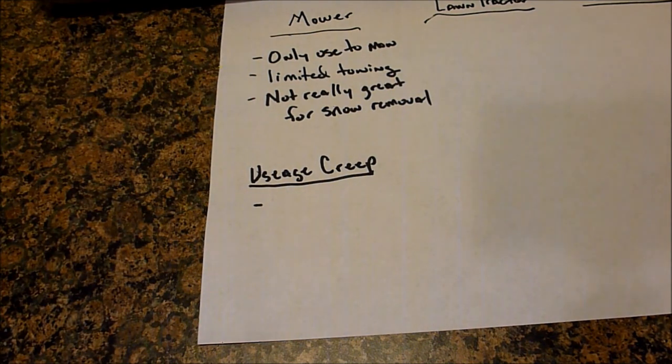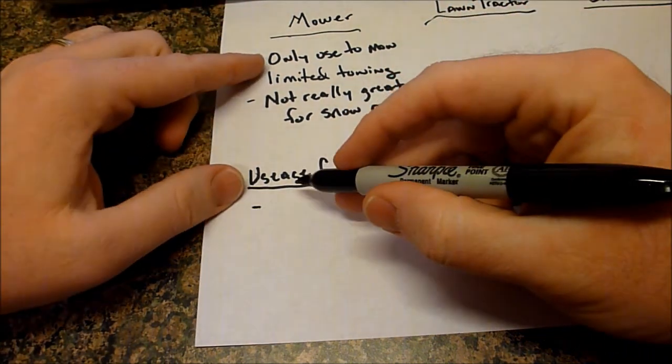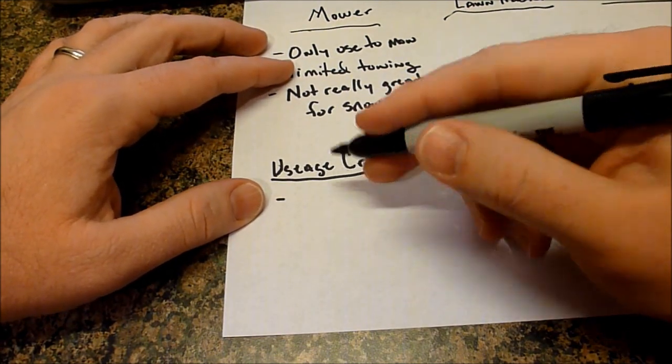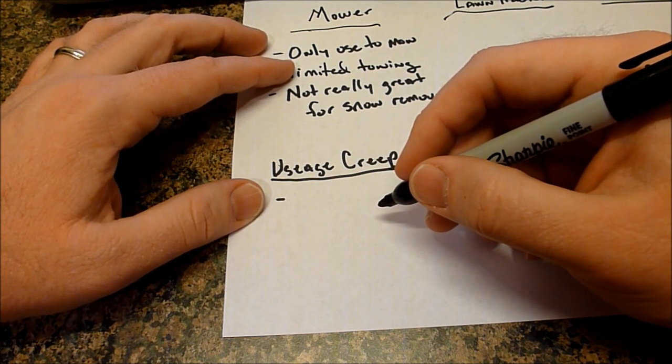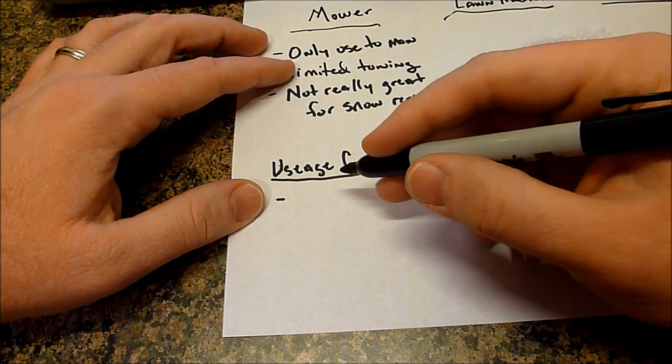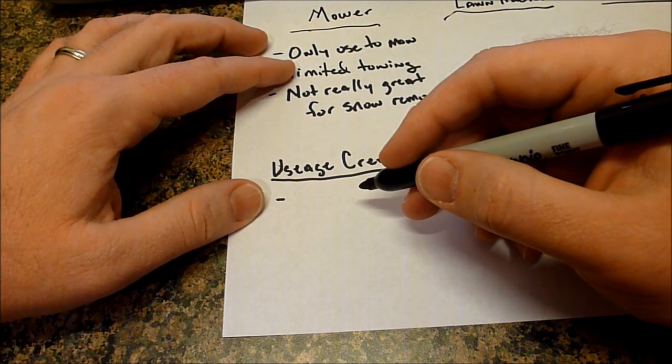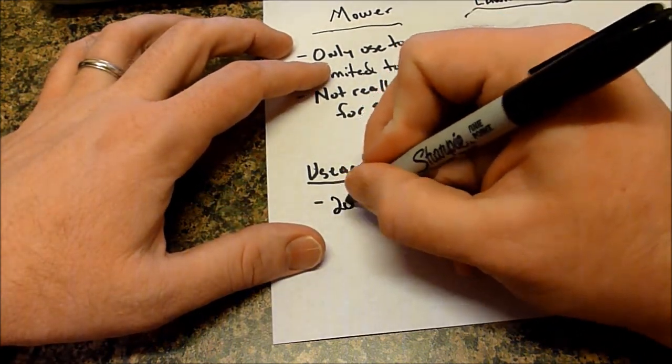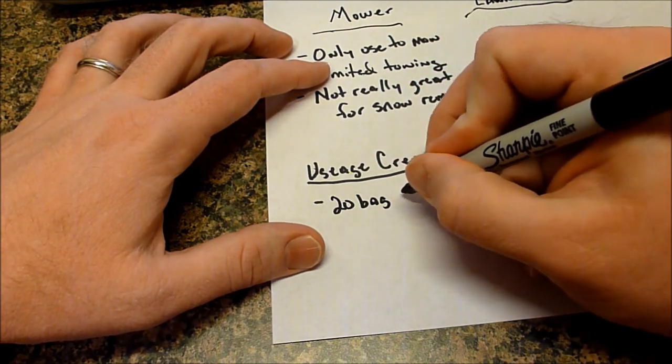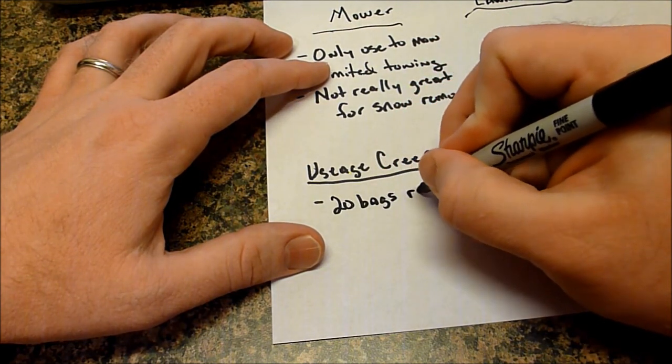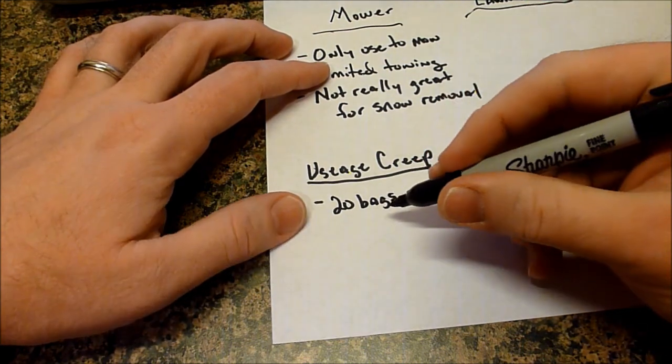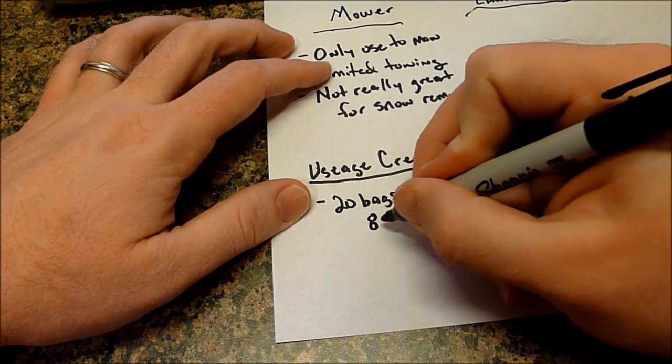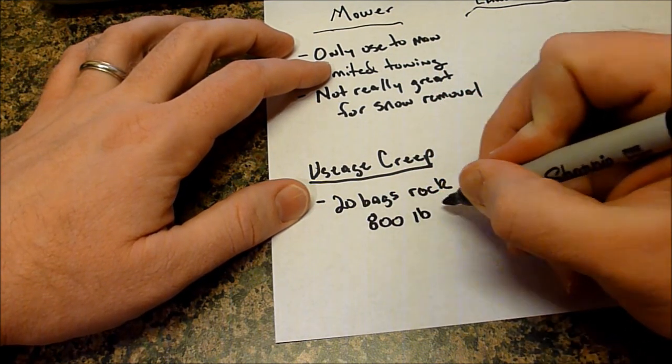Don't fall for usage creep. Usage creep is basically when, say you want to redo a flower bed and you calculate that you need 20 bags of rock from Home Depot, Lowe's, whatever big box store, you need 20 bags to redo it. Well, each one of those bags is going to weigh 40 pounds. And so you're dealing with 800 pounds, right? So 20 bags of rock. Let's say 40 pounds apiece, 20 bags of rock. So we're talking about 800 pounds.